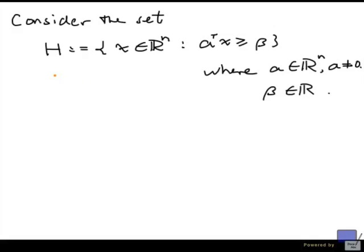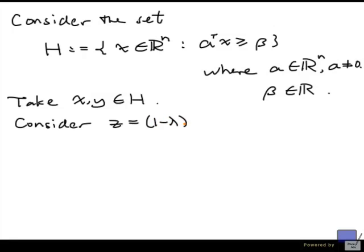So what do we need to show? We need to show that if we pick any two points from H, H contains the line segment between those two points. Let's take x and y from H. Consider z equal to (1-λ)x + λy for some λ from 0 to 1. So z is an arbitrary point on the line segment between x and y. Now I want to show that z is also in H. If I can do that, then that means every point on the line segment between x and y is an element of H.